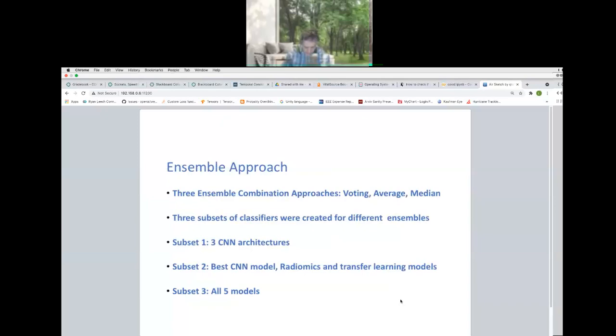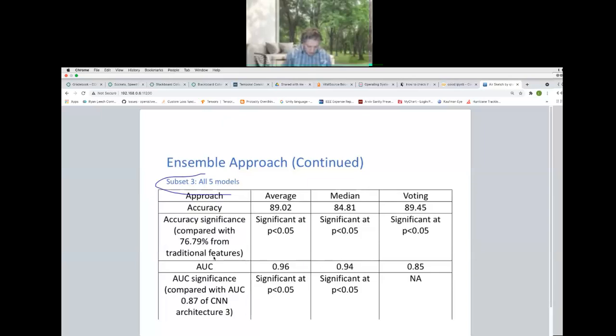But then we said, well, can we break this into, can we use all these and vote? And we can. And so we created ensemble combinations. We combined all these. We had either vote. We'd say, if you say cancer and the other one says no cancer, that's one for, one against. Or we just said, what is the average probability of cancer added up? And if it's the maximum versus no cancer, use that. Or we use the median probability. But I think we got the best results of average. We had three subsets of classifiers that were created for different ensembles. So three CNN architectures, best CNN model, radiomics and transfer learning models, and all of the models.